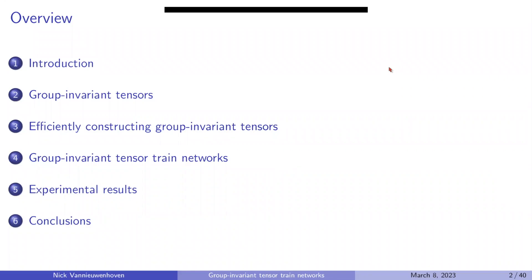I'll give a brief introduction to supervised learning and the setup we want to consider, then briefly introduce group invariant tensors — what tensors are, what multilinear functions are, and these invariances and group structure. The main novel contribution Brent carried out was a more efficient way of constructing group invariant tensors, which we then combine into tensor train networks for supervised learning applications.